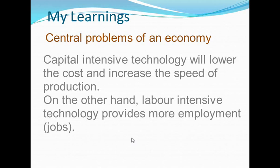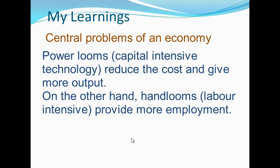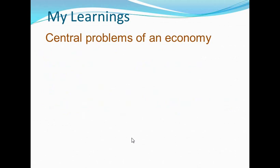For example, clothes can be produced by power looms as well as hand looms. Power looms reduce the cost and give more output. On the other hand, hand looms provide more employment. This gives rise to the problem of how to produce.